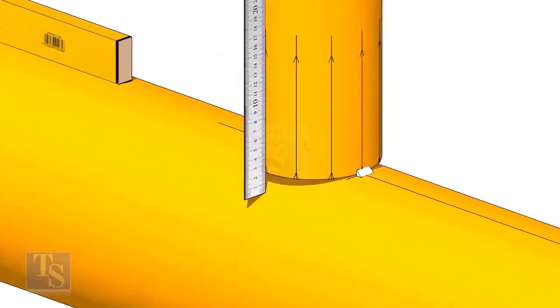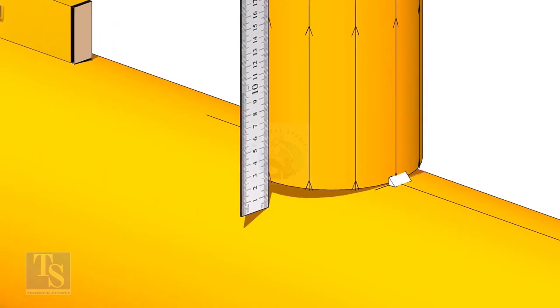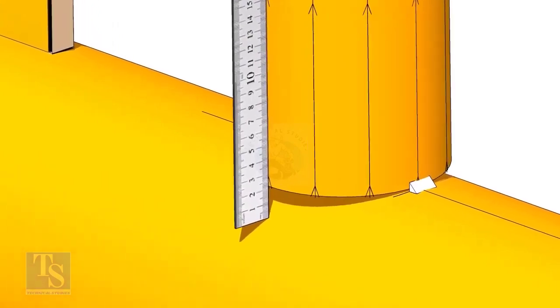Check the gap between the header and the branch as shown. When you measure, make sure the scale is vertical and is on the line on the branch pipe.